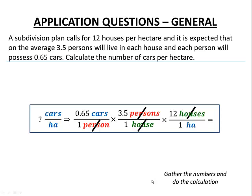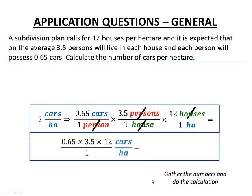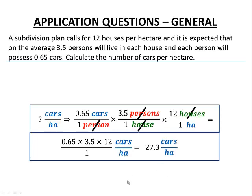We gather our numbers and do the calculation: 0.65 times 3.5 times 12, all over 1, with units of cars per hectare. Our final density for this particular subdivision is 27.3 cars per hectare, which we might need in other building construction science applications.